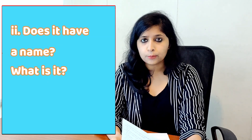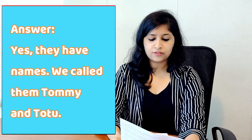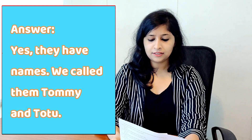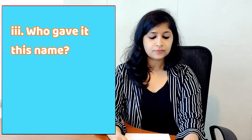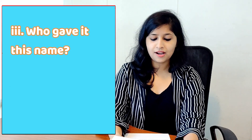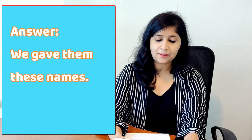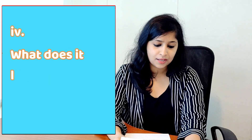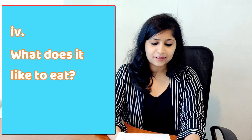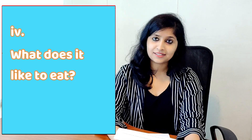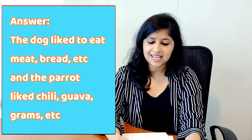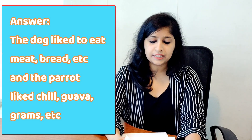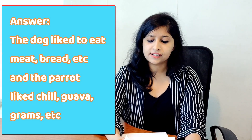Does it have a name? What is it? Answer: Yes, they have names. We call them Tommy and Totu. Who gave it this name? Answer: We gave them these names. What does it like to eat? Answer: The dog likes to eat meat, bread, etc. And the parrot likes chili, guava, grams, etc.